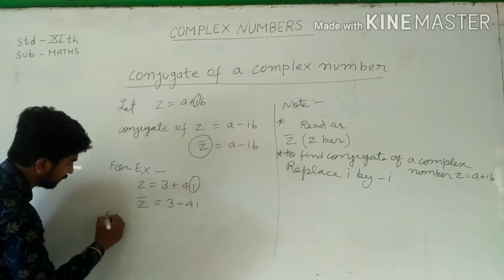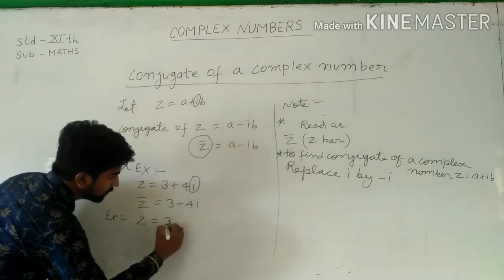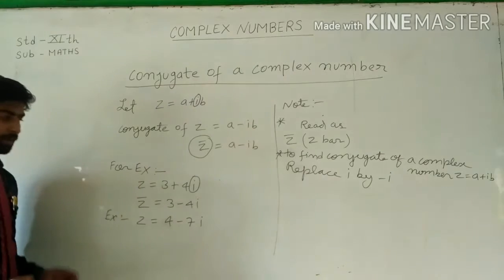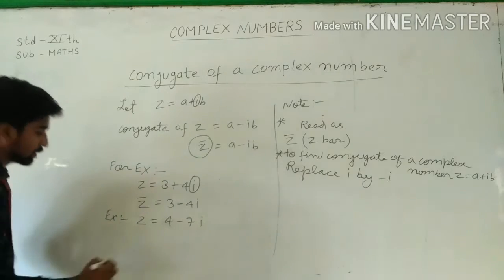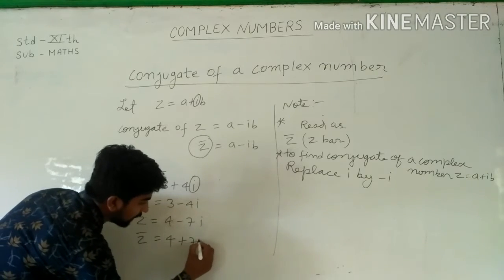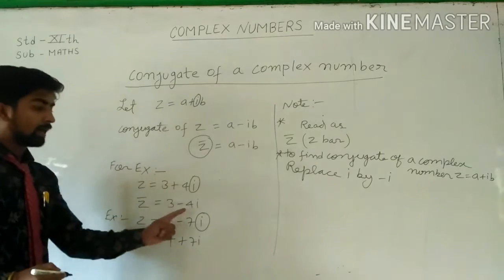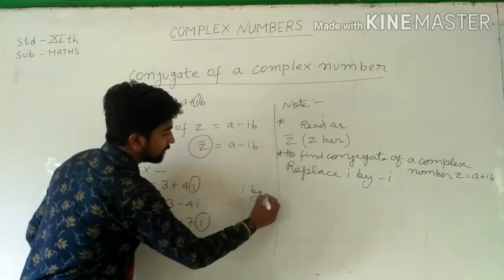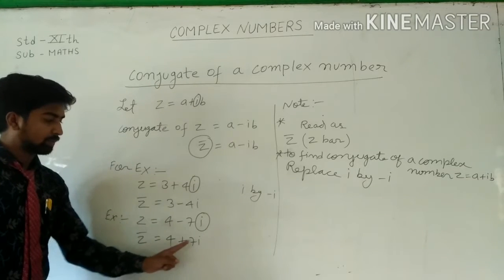Suppose another example: z equals 4 minus 7i. The conjugate of 4 minus 7i — so z-bar equals 4 plus 7i, because we have replaced i by minus i. Minus times minus becomes plus, so this equals 4 plus 7i.